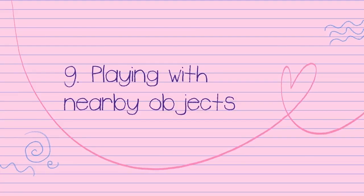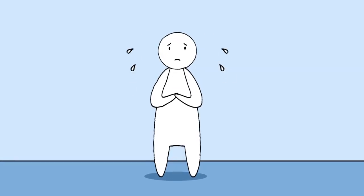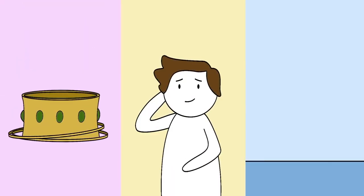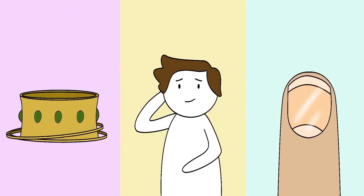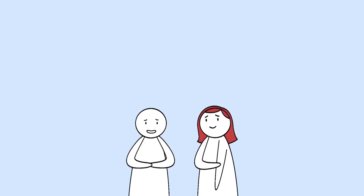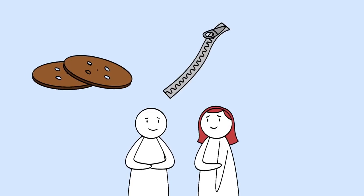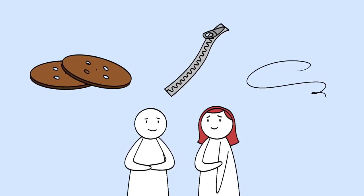9. Playing with nearby objects. When some people get nervous, they fidget. They might play with their hair, their bracelets, or their nails. But according to a recent study, those same behaviors might be linked with attraction. Researchers found that people who were flirting often found themselves playing with buttons on their shirts, zippers, strings, and many other nearby objects.